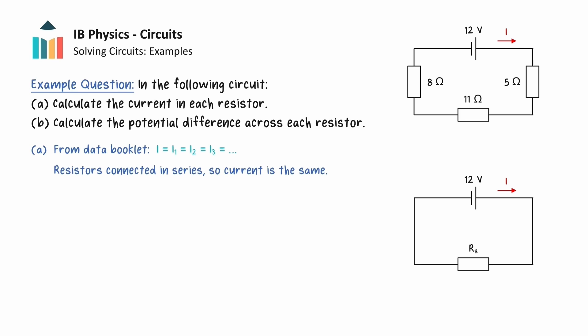The equivalent resistance of resistors connected in series is equal to the sum of the individual resistances, so we find that this single resistor has a resistance of 24 ohms.